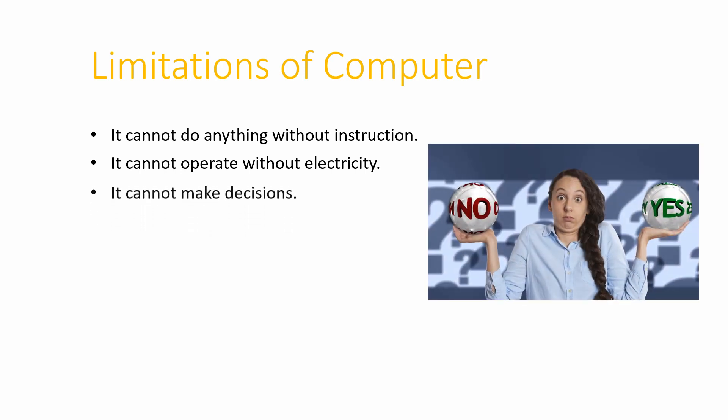The next limitation is that it cannot make decisions. Our computer system works on the basis of given instructions. It cannot decide itself what is wrong, what is right, what to do or what not to do. So it cannot make decisions, and that is also one of the weaknesses of our computer.